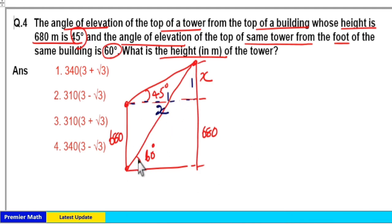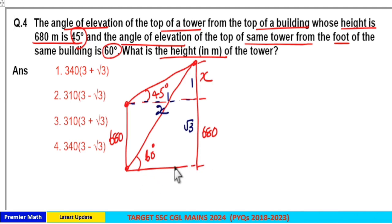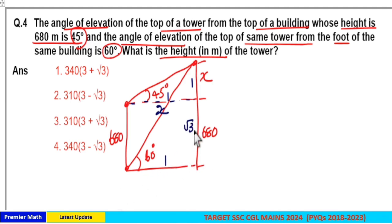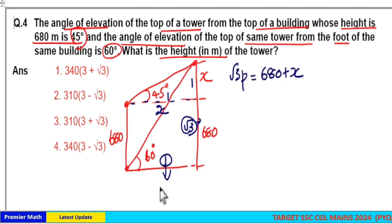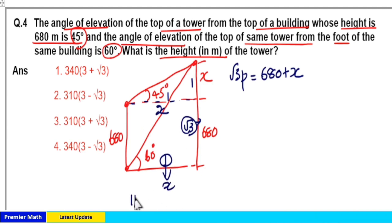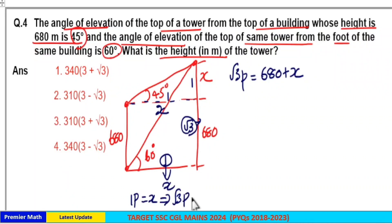From the larger triangle, tan 60 is root 3, which means the opposite side and adjacent side are in the ratio root 3 to 1. The root 3 part equals 680 plus x, and the one part is the horizontal distance x. Therefore, root 3 part equals root 3 times x.